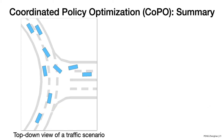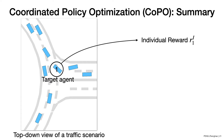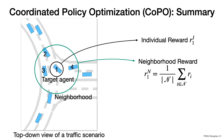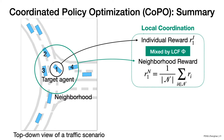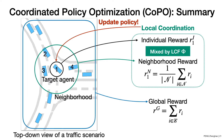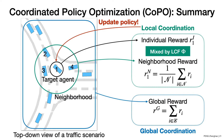To summarize the CoPO method: we collect the individual reward for the target agent, compute the neighborhood reward by averaging all rewards in the neighborhood, mix these two rewards using LCF to form the coordinated reward, compute the coordinated objective, and update each individual policy. This is local coordination. We then compute the global reward by summing all active agents' rewards, compute the meta-gradient with respect to LCF, and update LCF accordingly. This is global coordination. Together, this constitutes the full CoPO method.